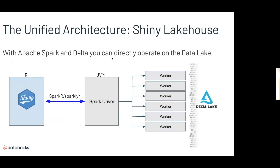How does the Shiny lakehouse look? Here I have data flowing into a data lake — in this case, Delta Lake — and I have a Spark cluster with a master node and worker nodes. Spark is implemented in Scala, a JVM language. I also have an R process running on the master node of my Spark cluster, and I use either SparkR or SparklyR to program the Spark cluster. Along with Delta Lake, this enables me to query massive amounts of data very conveniently.